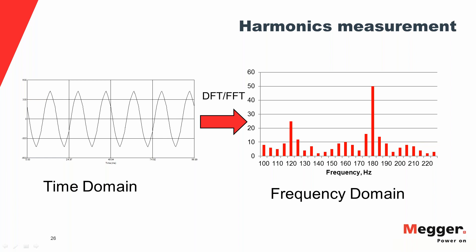When you analyze a waveform using DFT or FFT, you get different frequency components across a wide range of frequencies, each corresponding to a 5 Hz bin. For example, 180 Hz is at the center of a 5 Hz bin, with a 5 Hz bin to its right and left. Taking those three 5 Hz bins around 180 Hz gives a single 15 Hz band. All frequency components between 180 ± 7.5 Hz are grouped under the third harmonic. Similarly, frequency components within ± 7.5 Hz of 120 Hz are grouped under the second harmonic.